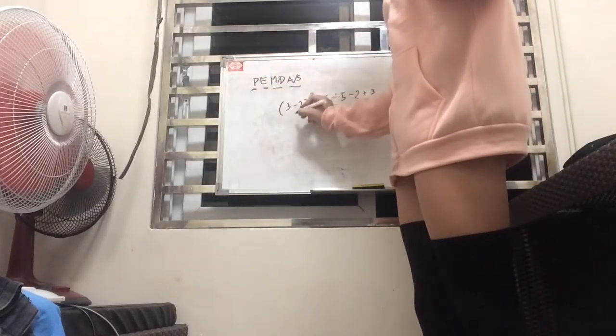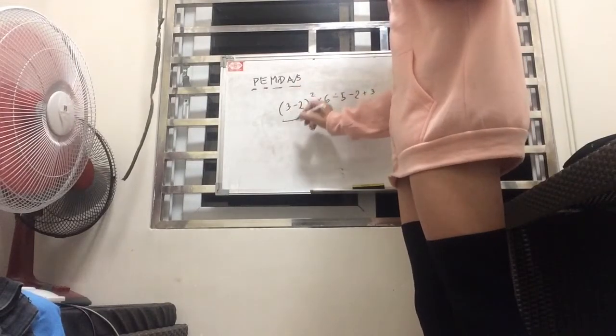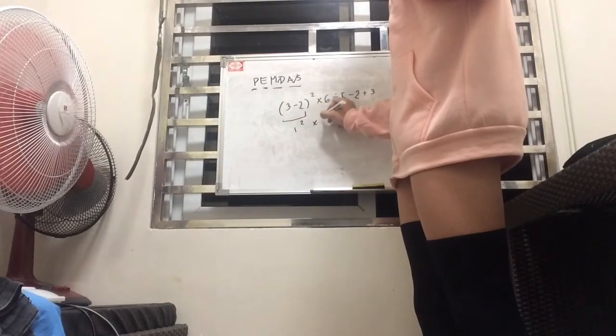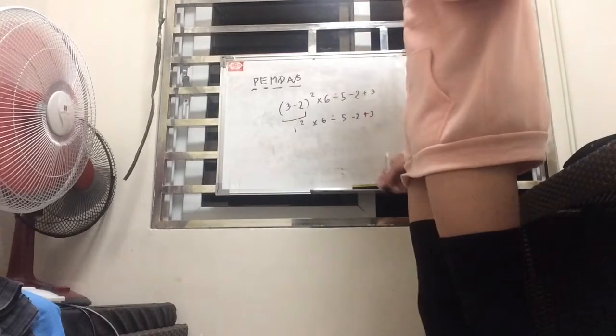How will we go about it? So we follow PEMDAS. So it says here first that we do the parenthesis. So we subtract these two over here, and that's going to be 1 squared times 6, divided by 5 minus 2 plus 3.